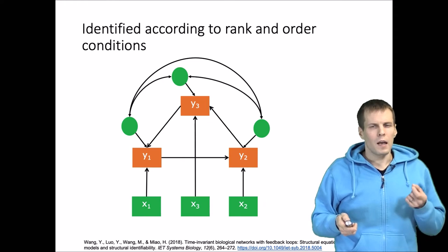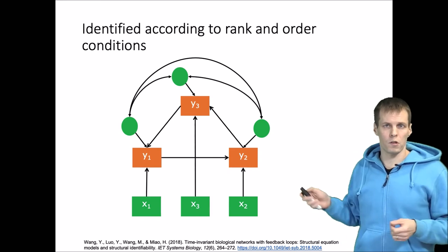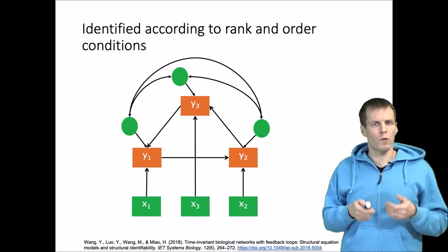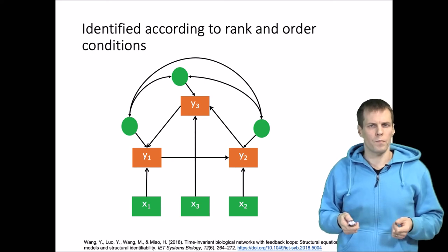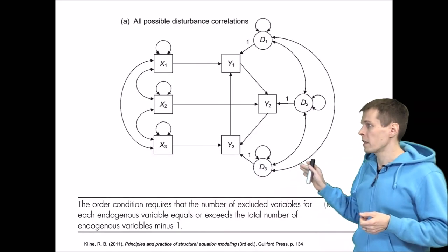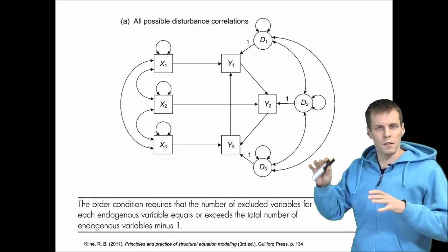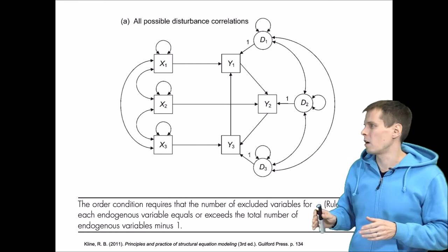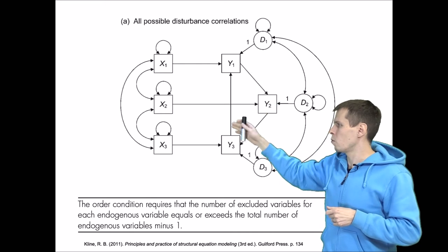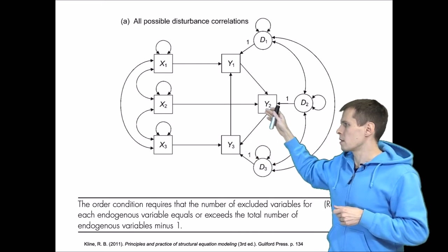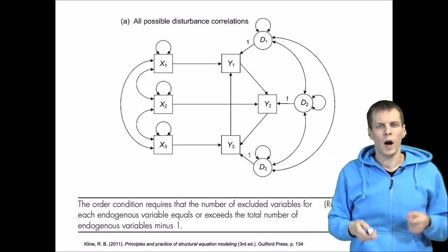This model is identified according to rules found in any good book on structural equation modeling — the rules are called rank and order conditions. Both conditions are satisfied in this model. Klein explains this same model, just drawn sideways rather than vertically, with y1, y3 and y2 forming the same loop we discussed.